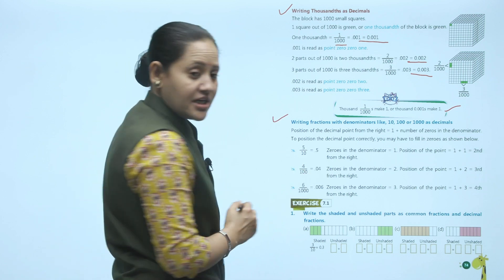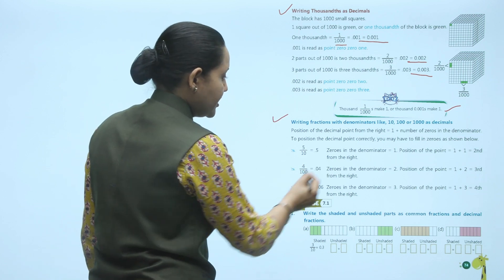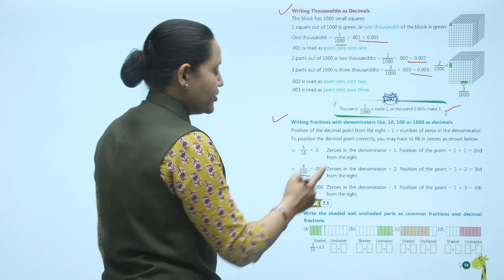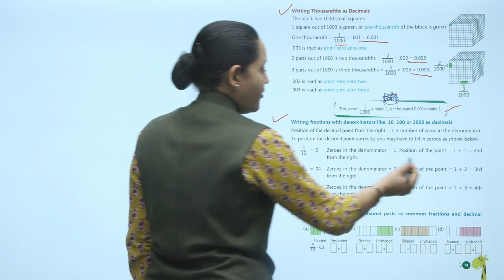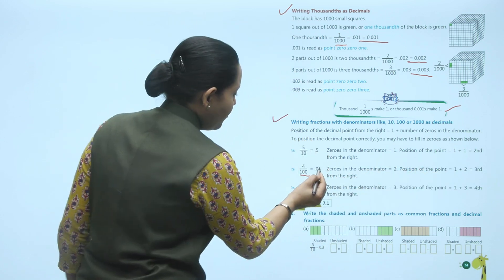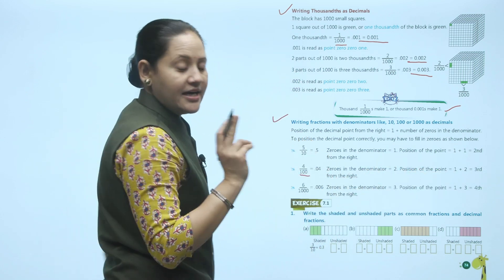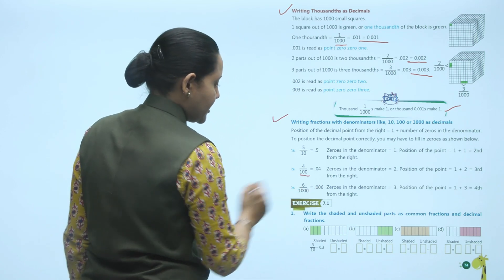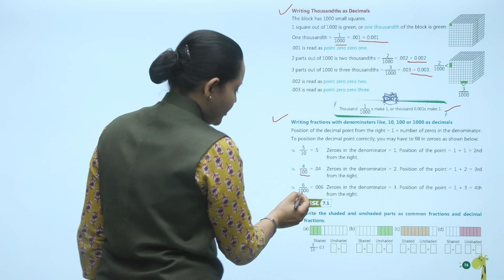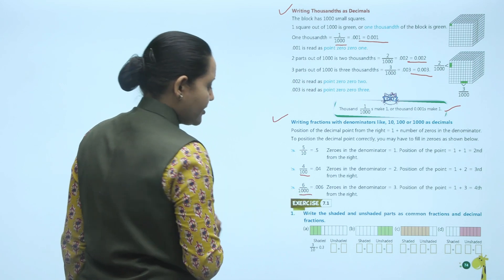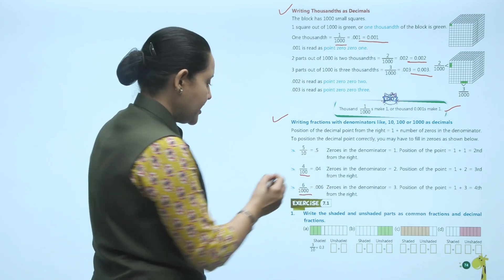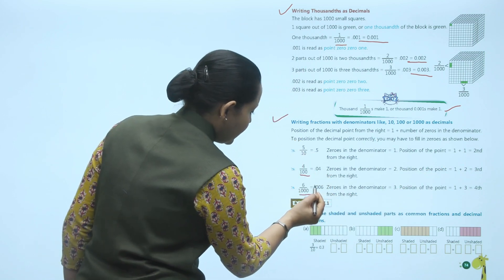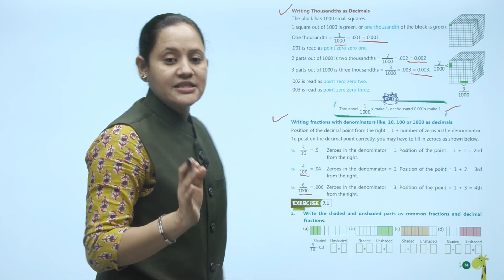4 upon 100: there are two zeros in the denominator, so the decimal position is 1 plus 2 equals 3 from the right, giving 0.04. 6 upon 1000: there are three zeros, so position is 1 plus 3 equals 4 from the right, giving 0.006. This is how we place the decimal. This exercise you should practice on your own.